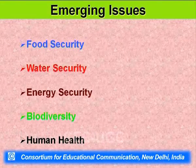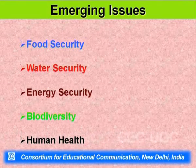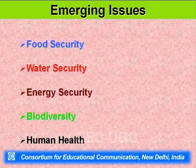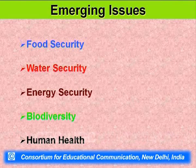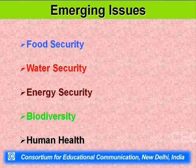The emerging issues and challenges include food security, water security, energy security, biodiversity, and human health. These are important issues to be tackled by any discipline. Environmental geography can contribute to achieving food security, water security, energy security, biodiversity conservation, and protection of human health.